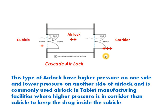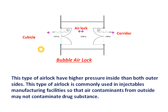Cascade airlock is mostly used in tablet and capsule manufacturing areas because powders are generated there. The second type is bubble airlock. As shown in the diagram, bubble airlock has maximum pressure compared to its surrounding areas — both the corridor and the cubicle. The corridor is indicated by a single plus and the airlock by a double plus. For example, if the airlock has 30 pascal pressure, then the corridor will have 15 pascal and the cubicle will also have 15 pascal.